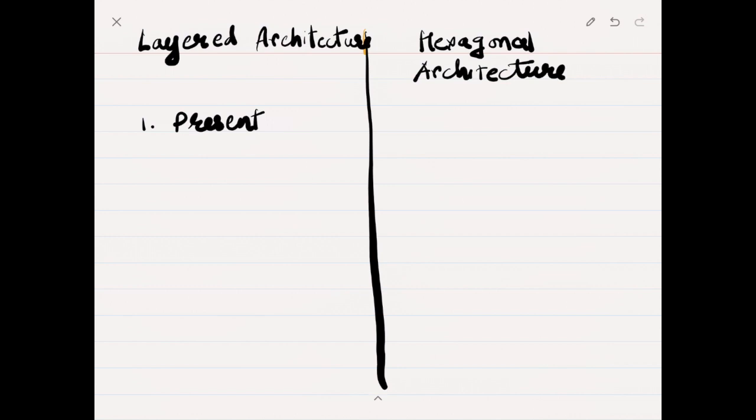Let's summarize what is the difference between hexagonal and layered architecture. In layered architecture we have a presentation layer, whereas in hexagonal architecture there are inbound ports which handle requests from the outside world and it keeps the business logic at the core.